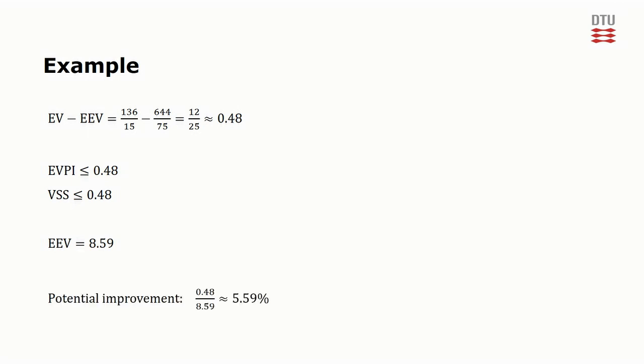Next we can use these values to determine an upper bound on the expected value of perfect information and the value of the stochastic solution. This upper bound turns out to be approximately 0.48. Compared to the value of EEV, which is at 8.59, 0.48 is around 5.6%. Depending on the magnitude of the problem, this could for example mean a significant potential increase in sales. And it might convince a company that they should spend more money on improving their knowledge of the stochastic parameters or solve the recourse problem.